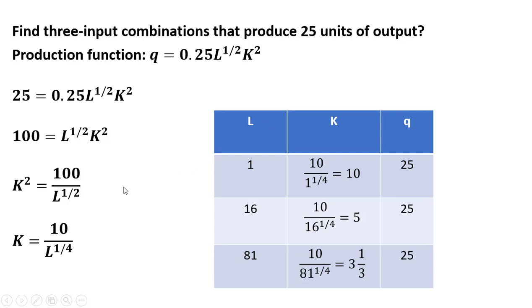Let's find another input combination that gives us 25 units of output, or just another point on this isoquant where q is 25, plugging in 16 for L. So 10 divided by 16 raised to the 1 fourth power is 5. So when L equals 16 and K equals 5, we'll also get 25 units of output. And again, you can double-check your work by plugging 16 in for L up here and 5 for K up here.